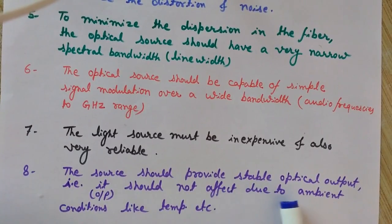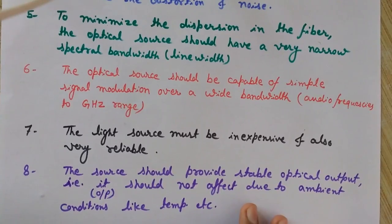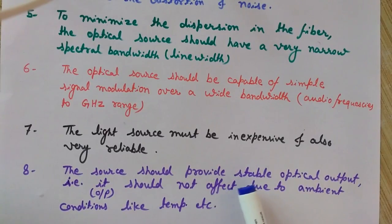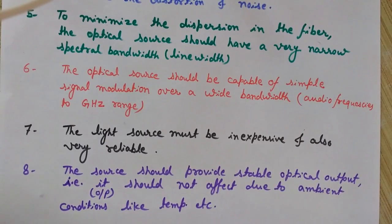The eighth property: the source should provide stable optical output — it should not be affected by ambient conditions like temperature. There are many factors that may affect the working of the optical fiber, so the source should provide very stable output that does not vary with environmental or ambient conditions.